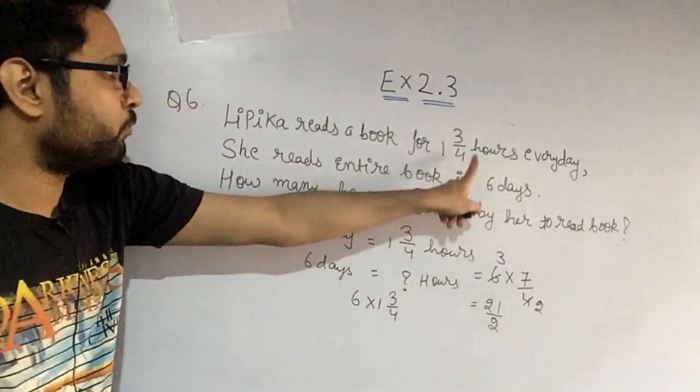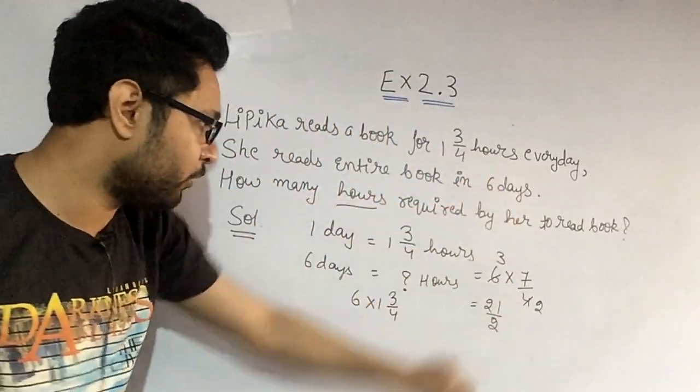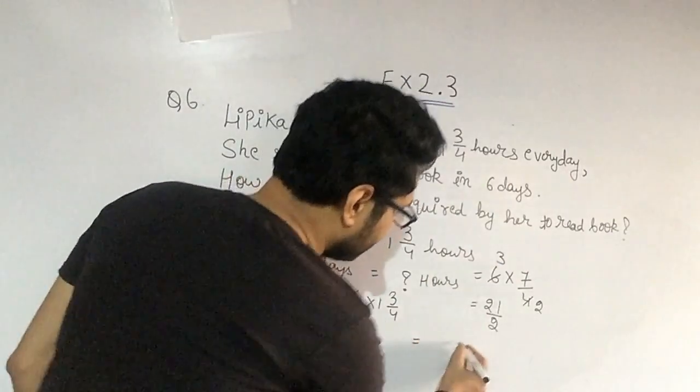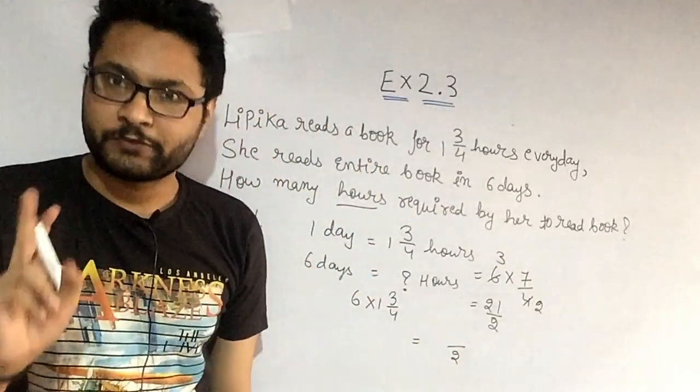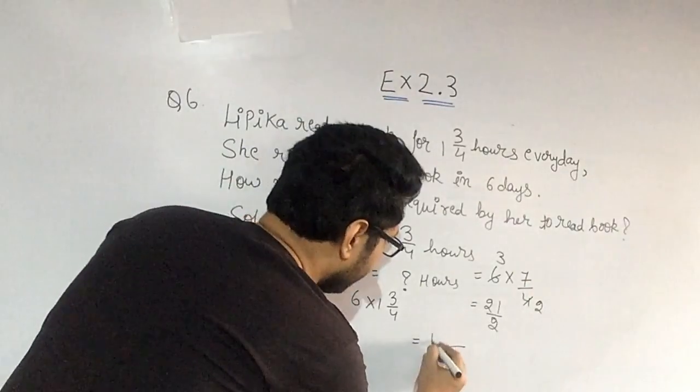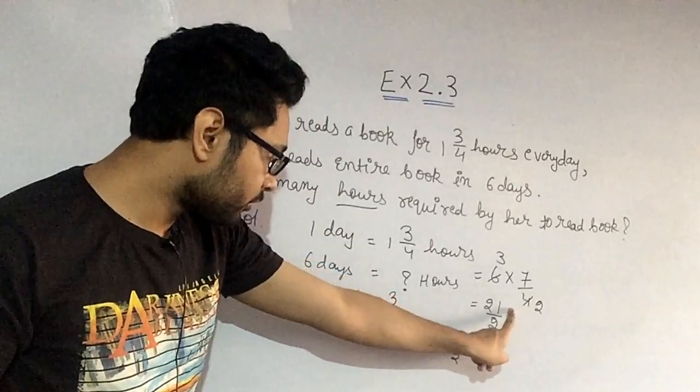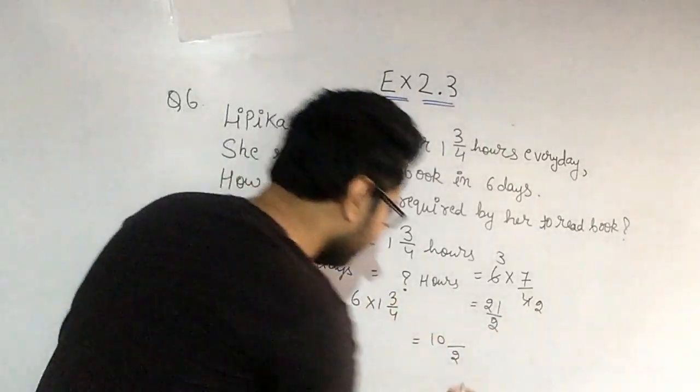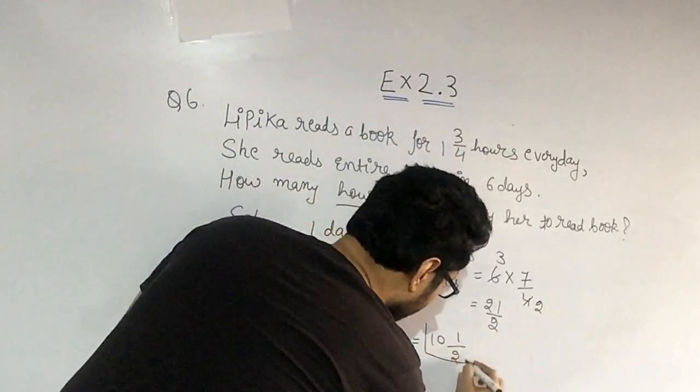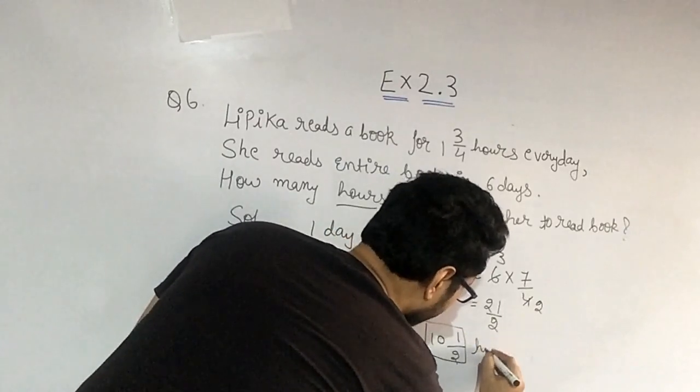Now 21 upon two, I have to bring it into what? Mixed fraction. This is very easy. See, what will be the answer? Write below two, two tens are twenty, so here write ten. Tens are twenty, twenty one minus twenty, how much will it become? One. So just write one here. Ten one by two hours.